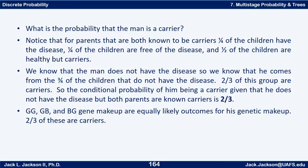GG, GB, and BG are the equally likely outcomes for his genetic makeup, and two-thirds of those are carriers.